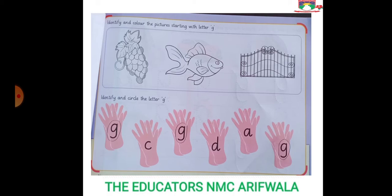First of all, we need to create an outline, then we need to create an outline in the center, then we need to add a dark color. Then we need to work on the gate. To create an outline on the gate, the lines are dark green. We need to create an outline in the center.